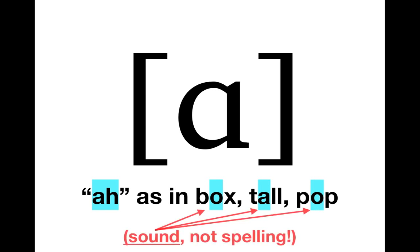As I mentioned before, we're talking about the sound, not the spelling. Notice, for example, that the words box and pop have O's in them, but they don't make an O sound. They make an A sound. So we're focused on what they sound like, which means that they'll be associated with this A symbol and not with any other.